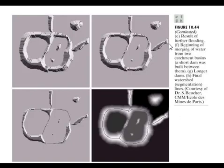E stands for result of further flooding. See there was black portion over here, now it is also filled with water. We have to fill so much water that we can get only the borders. In figure F, this is the beginning of merging of water from two different catchment areas.